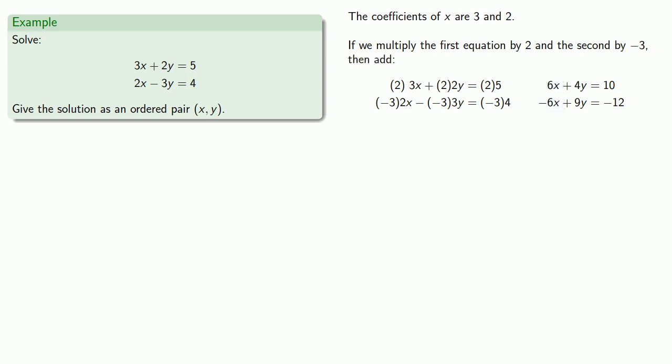So if we add, our x term is dropped out, and we have a much simpler equation. Since this equation only has one variable, we can solve it easily, y equals negative 2 thirteenths. And this gives us half a solution.